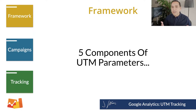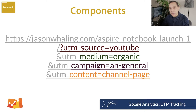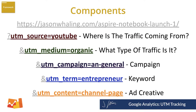Let's talk about the five elements of UTM parameters and what you can do with them to make sure you're tracking everything you need. Looking at this URL again, let's break down what each one is. First, source — this is simply telling Google Analytics where the traffic is coming from. Medium is going to be what type of traffic it is: is it organic, is it paid, is it a referral?